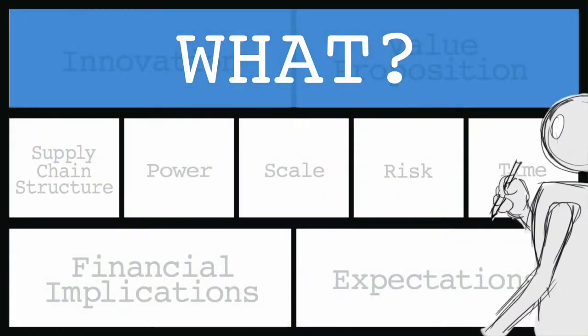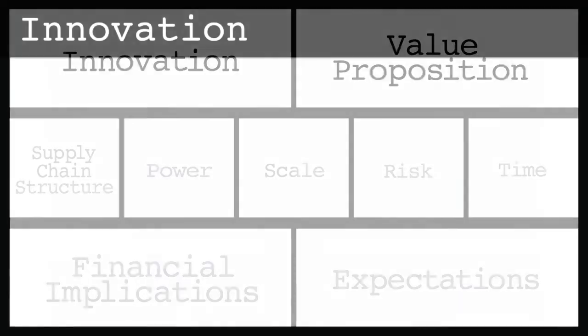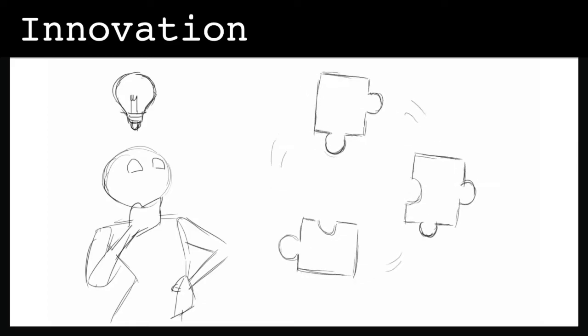You begin by filling out the canvas, starting with the top row, the what. First, you'll describe the innovation in a simple and convincing manner for a general business audience.